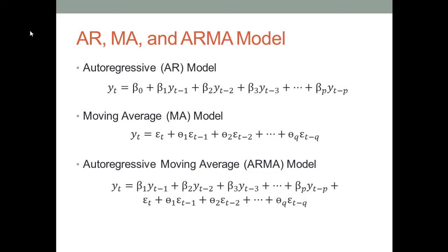The third one is a combination of the AR and MA models. This model believes that both the AR model and the MA model have valid points, so why not combine both models together to forecast the current value? In practice, we use the short name ARMA to represent the autoregressive moving average model.